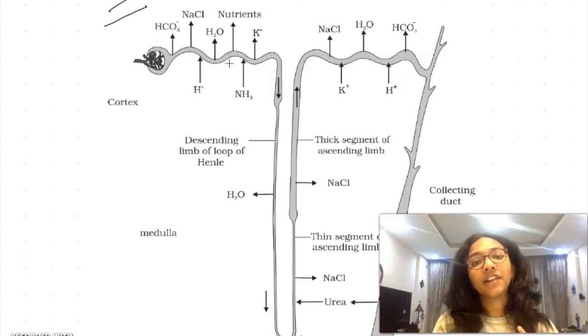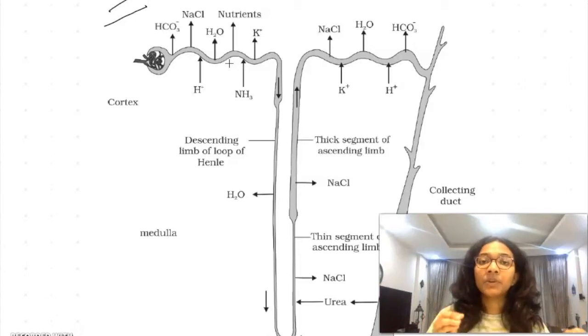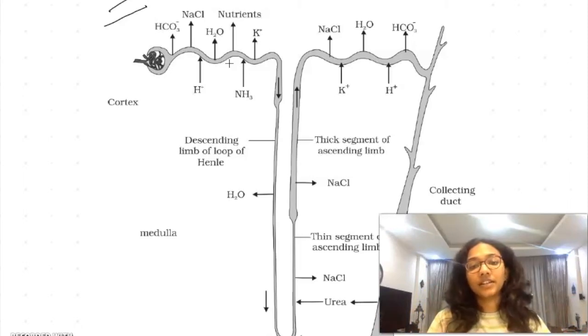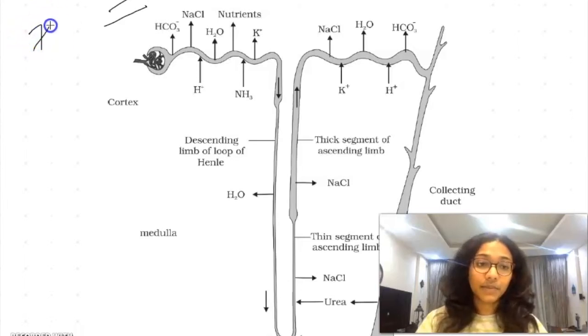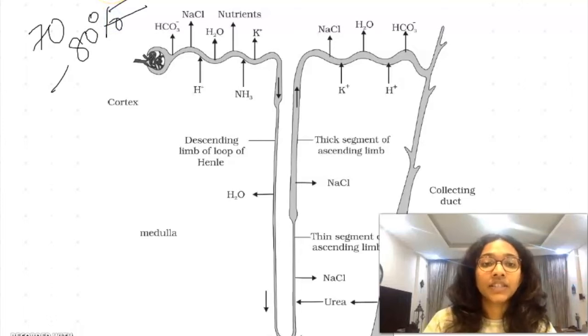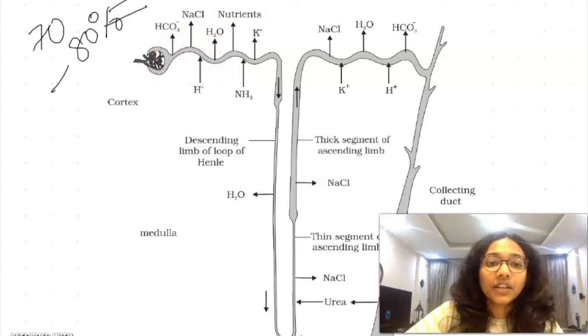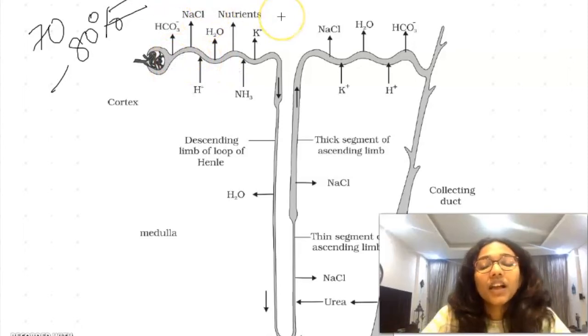The concentration of these substances are more in the blood, so they are taken by active transport into the blood. Active transport is transportation of substances with the help of special proteins from a lower concentration to a higher concentration with the expenditure of energy. So ATP is required for this process. Also, 70 to 80% of electrolytes or ions are reabsorbed in the proximal convoluted tubule.